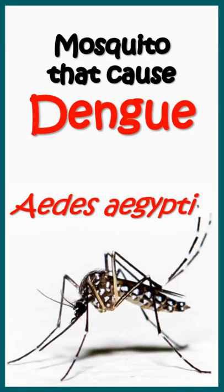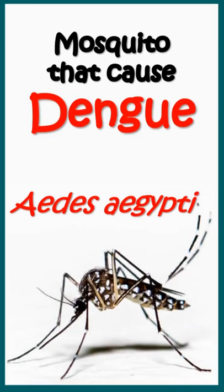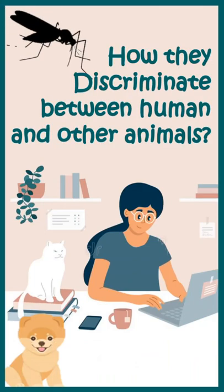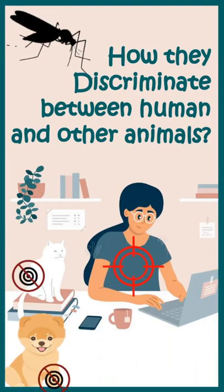Mosquitoes can cause many diseases like dengue. Do you know how a dengue mosquito can discriminate you versus a particular animal, let's say a cat or a dog?